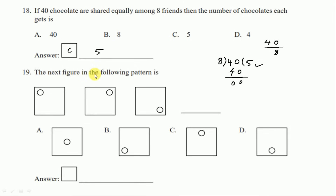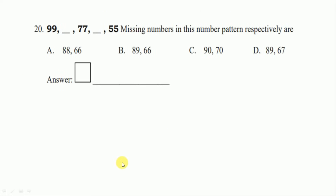Question number nineteen: the next figure in the following pattern. In each figure, a small circle is moving from one side to another in a clockwise direction — first moving right, then downward, and next it should shift to the left side. The correct option is option B — draw the figure.